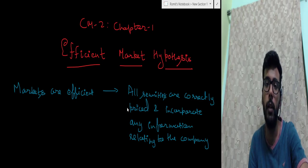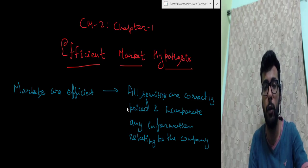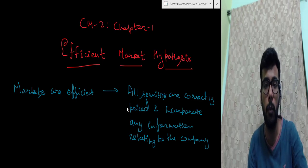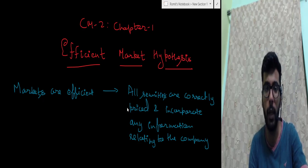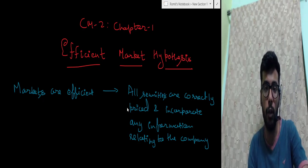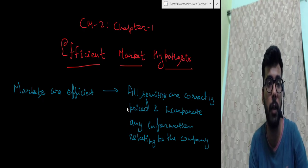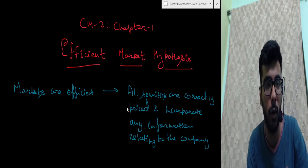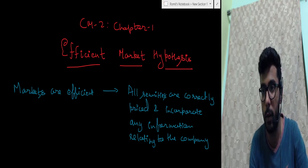Hello and welcome. In this video we will talk about the efficient market hypothesis, which is CM2 chapter number 1. So let's talk about efficiency and inefficiency first of all — what are inefficient markets and efficient markets? Let's talk about the pricing mechanism in markets first.